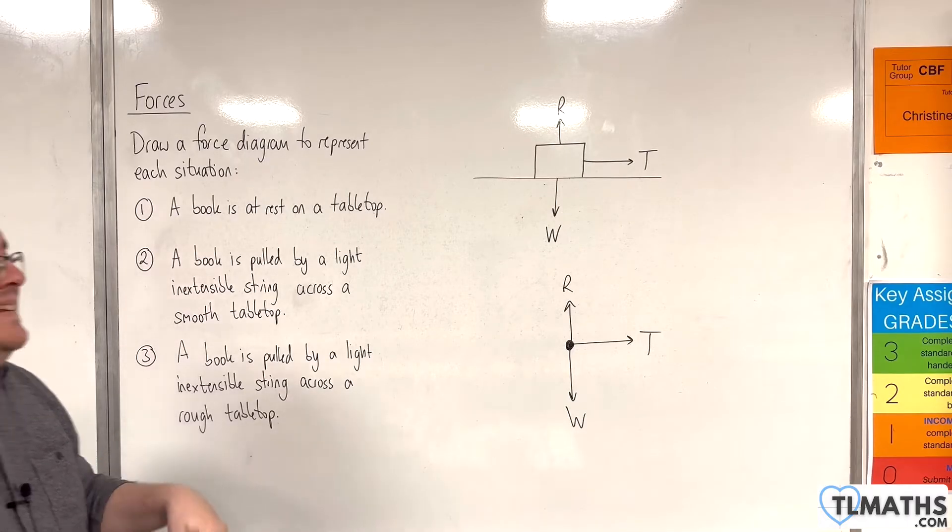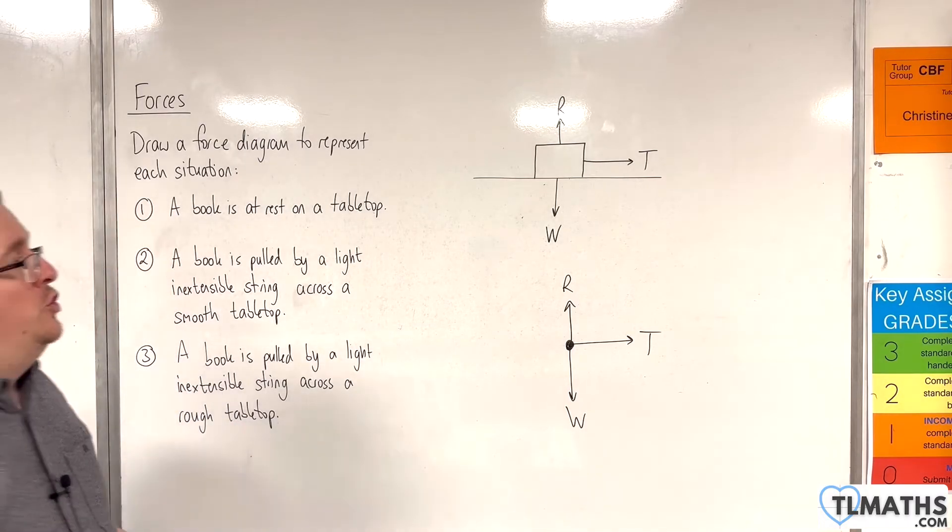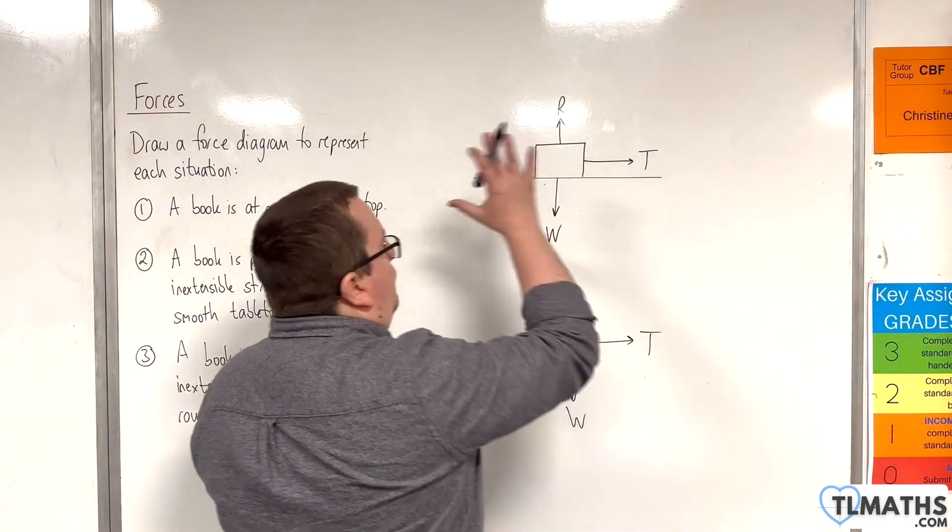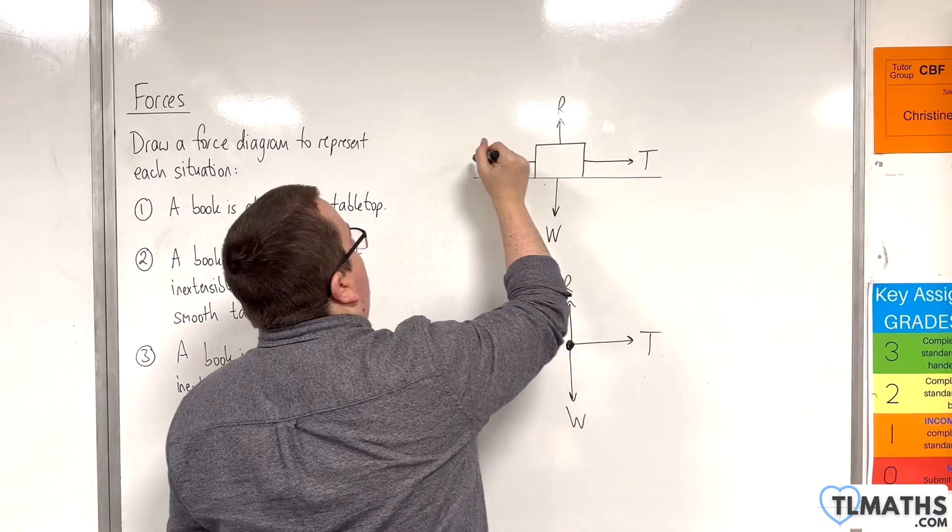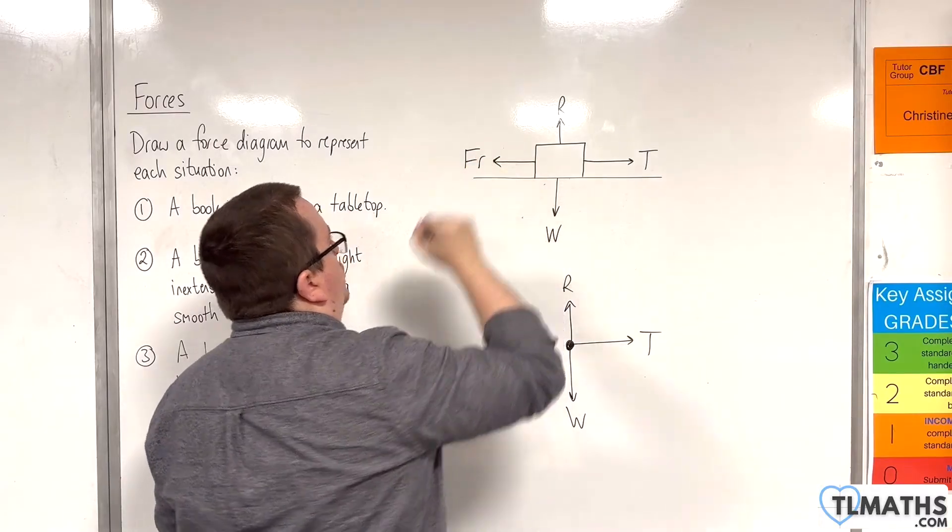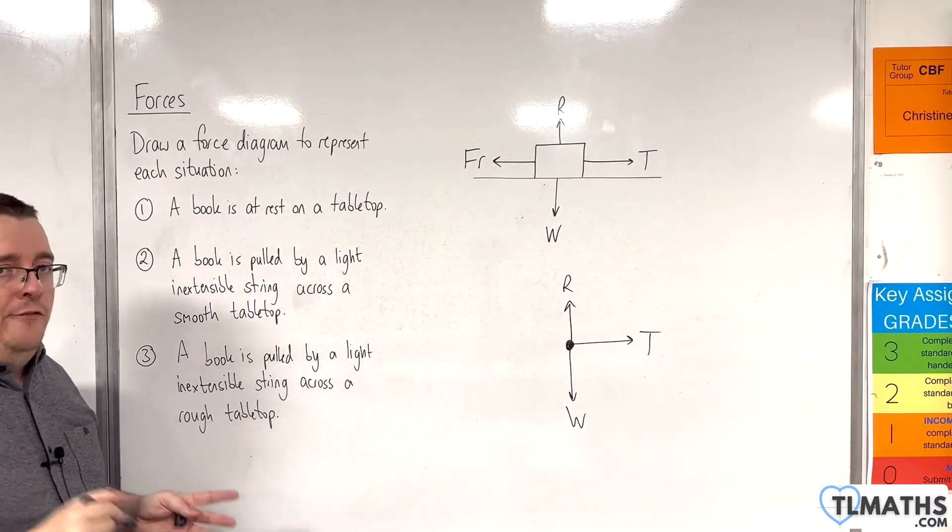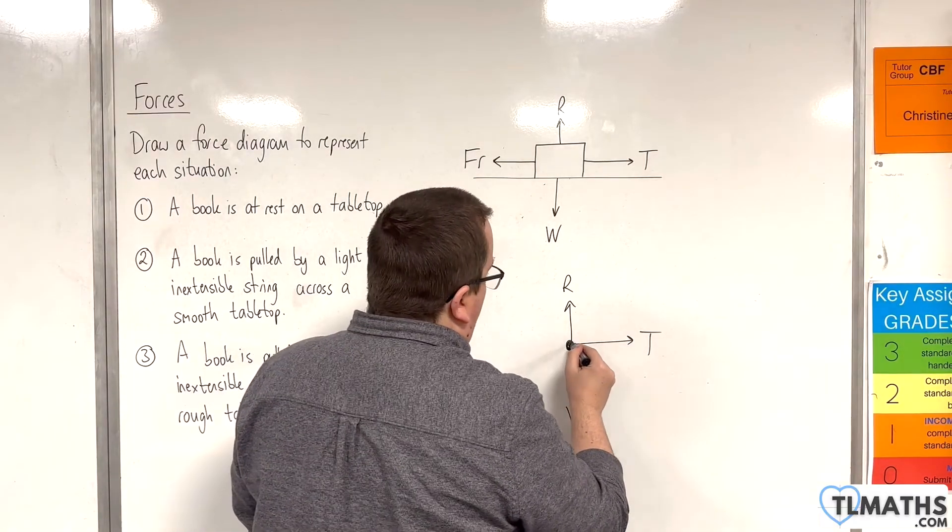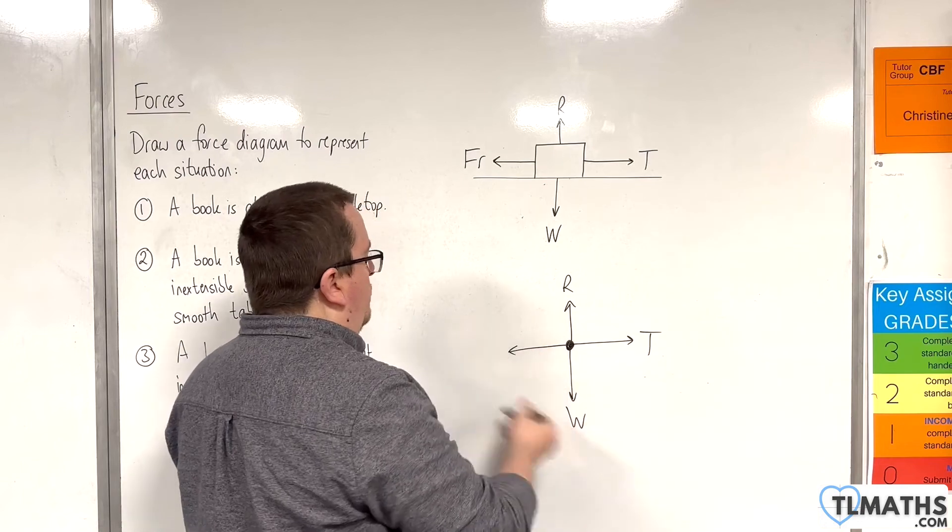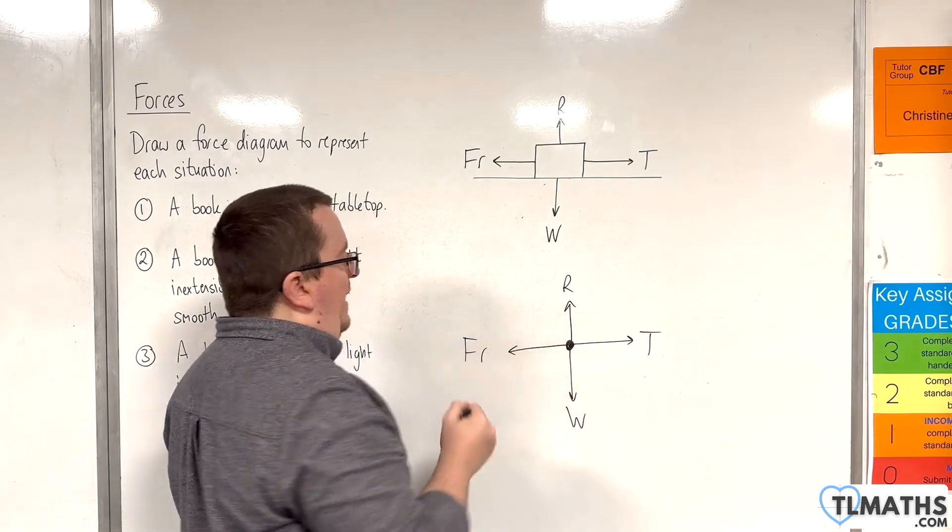And friction acts against the direction of motion. So if the block is moving towards the right, then the friction must act in the opposite direction. And I'm going to label that as FR. You can just label it as F. It's really up to you. So on my minimalist diagram, I'll have FR working towards the left.